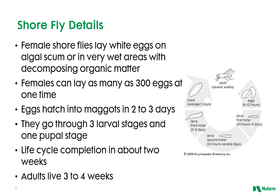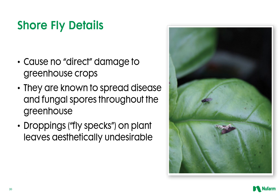Female shore flies lay as many as 300 white eggs at a time on algal scum or in very wet areas with decomposing organic matter. Eggs hatch in two to three days and go through three larval stages and one pupal stage. The life cycle is completed in about two weeks, and adults can live for three to four weeks. While shore flies cause no direct plant damage, they are known to spread disease spores, and their fly specs on plant leaves are certainly undesirable, especially on something like basil.